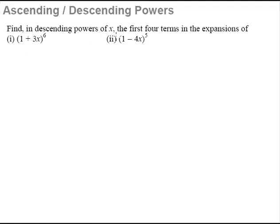Find in descending powers of x, the first four terms in the expansion of (1+3x)^6 and (1-4x)^5. Now, this is exactly the same question that we saw in example 1. The only difference is that now it's in descending order. Now, how are we going to do that?